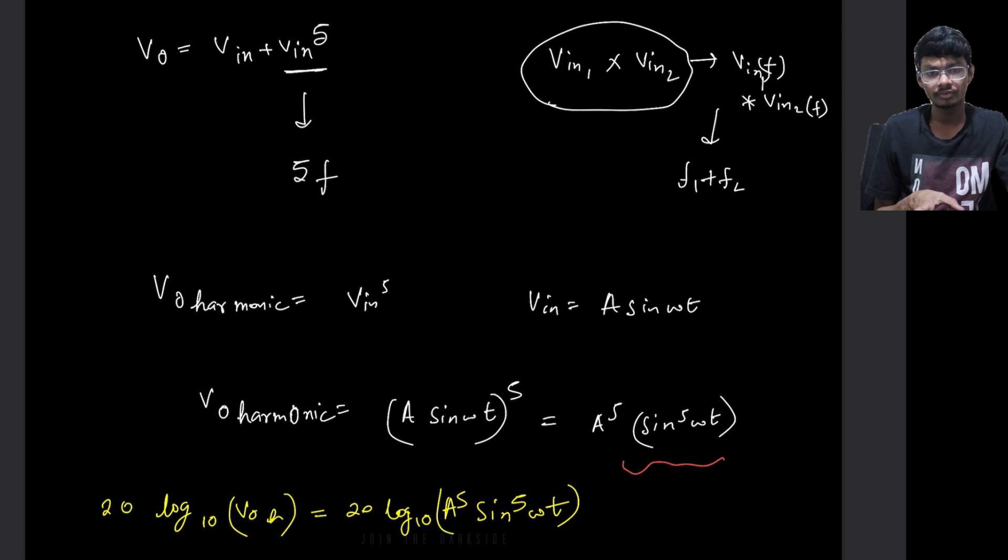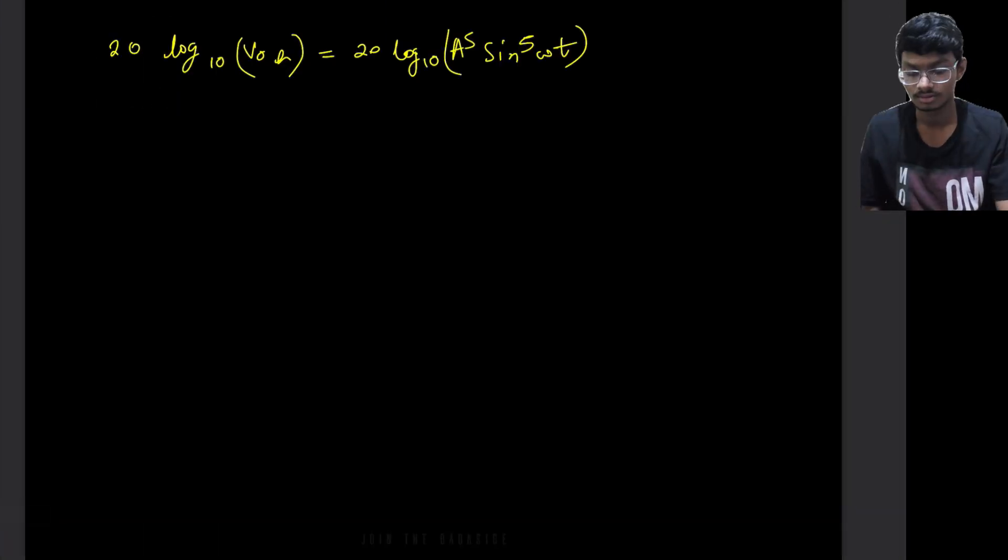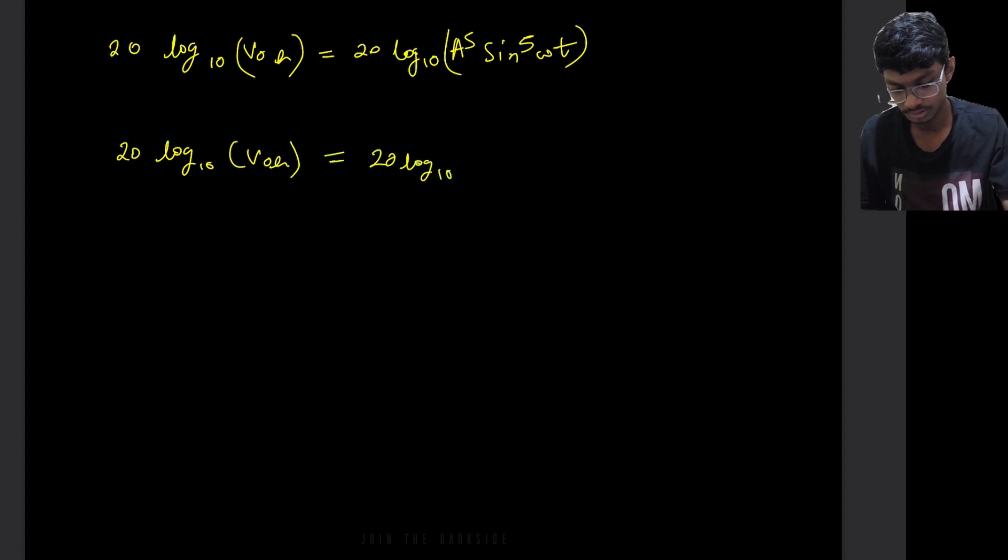So here, what we can observe is if we simplify this equation, we will get something like this: 20 log base 10 VO of H equals to 20 log base 10 A to the power 5 plus 20 log base 10 sine to the power 5 omega t.